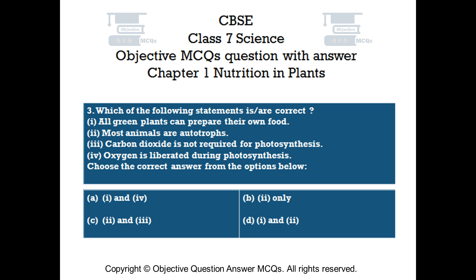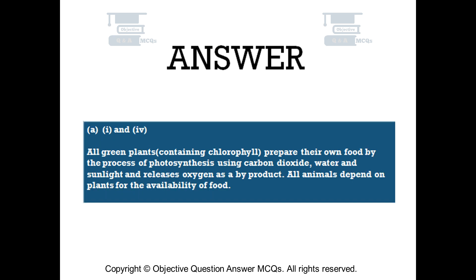The right answer is option A: 1 and 4. All green plants containing chlorophyll prepare their own food by the process of photosynthesis using carbon dioxide, water and sunlight, and release oxygen as a byproduct. All animals depend on plants for the availability of food.